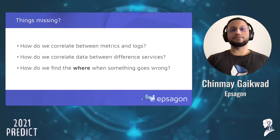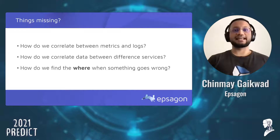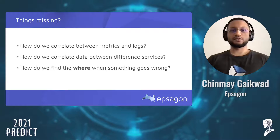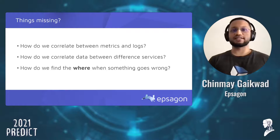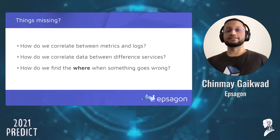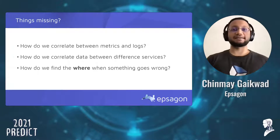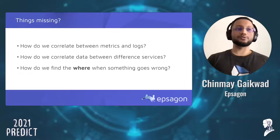While log aggregators help bridge the gap of centralization, logs still lack the context to an event or metric you're tracking. Logs are also heavy and poorly structured, making it even more challenging to determine what's going wrong. In our virtual shop example, if you're very lucky you'll be able to spot the problem, but it will definitely take a very long time. It essentially boils down to correlation — correlation between metrics, logs, and between different services — which will help find the exact problem.